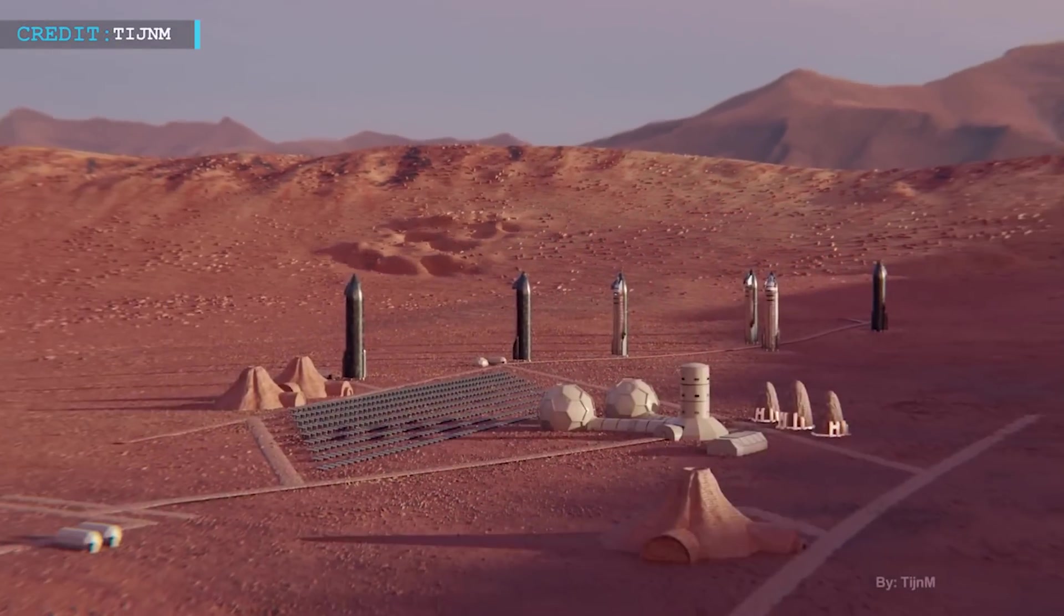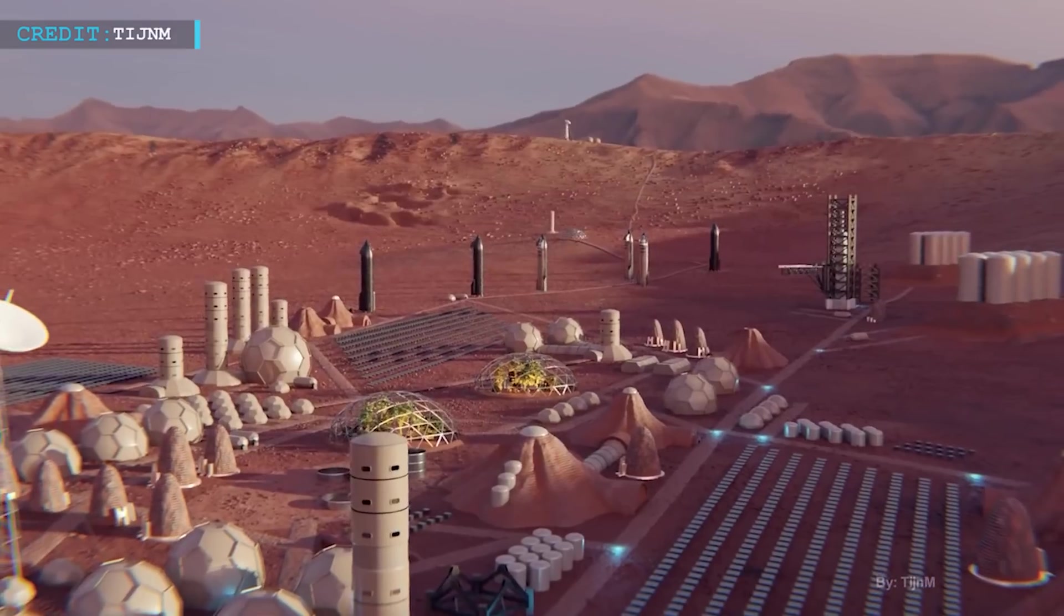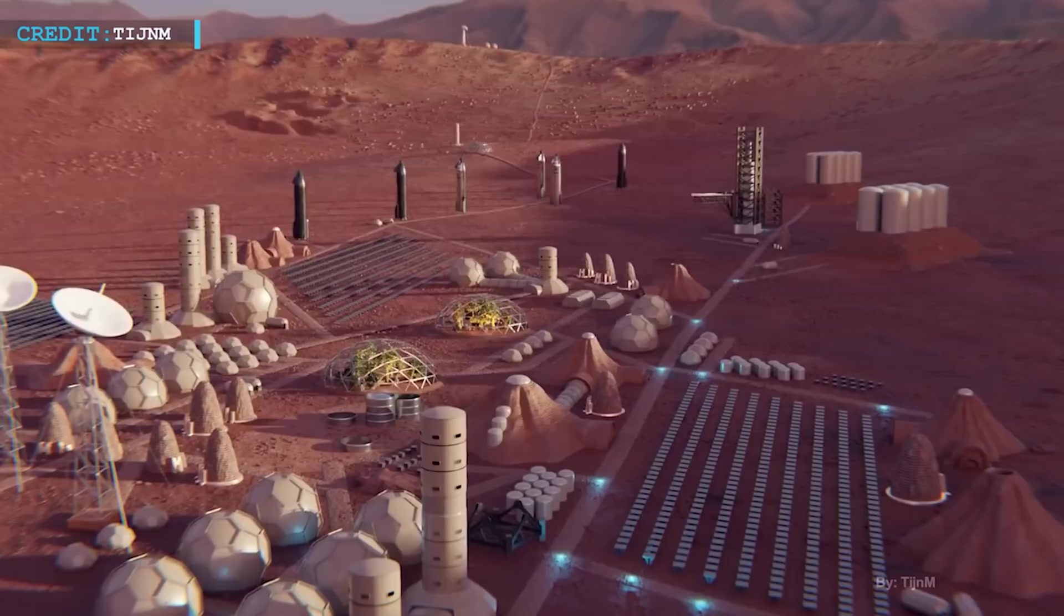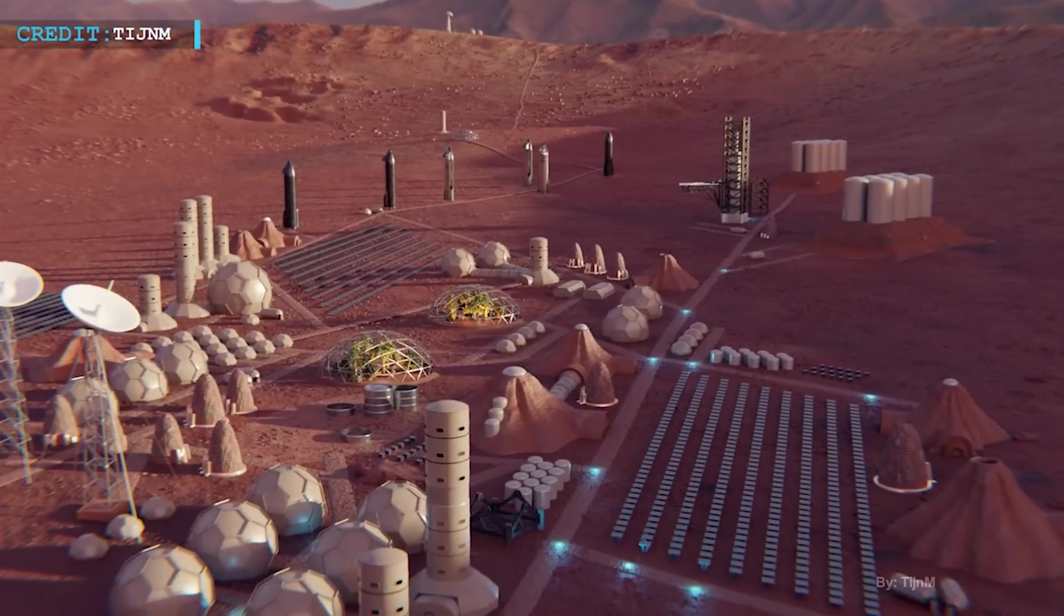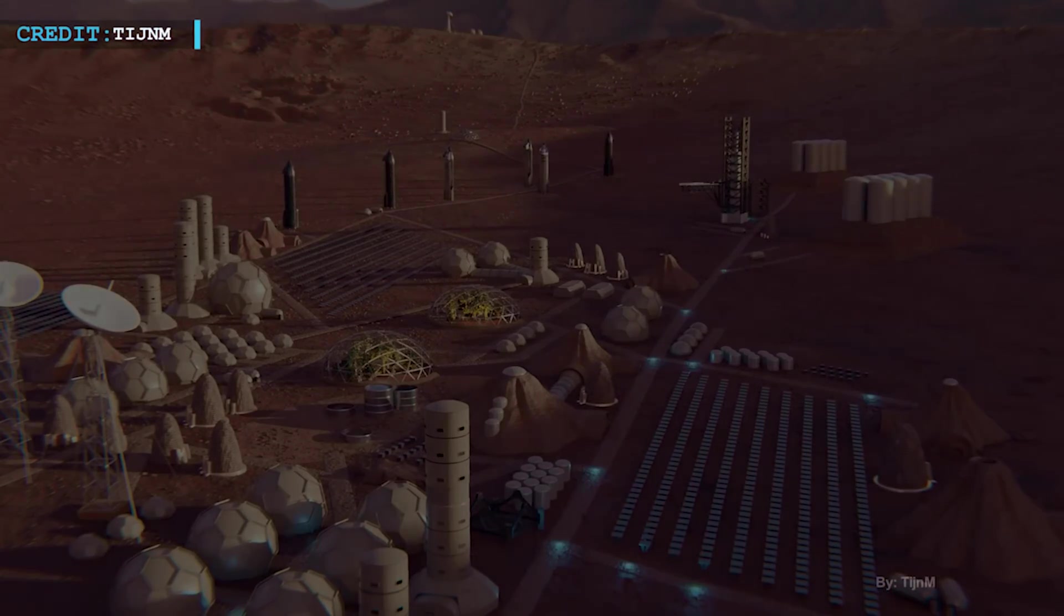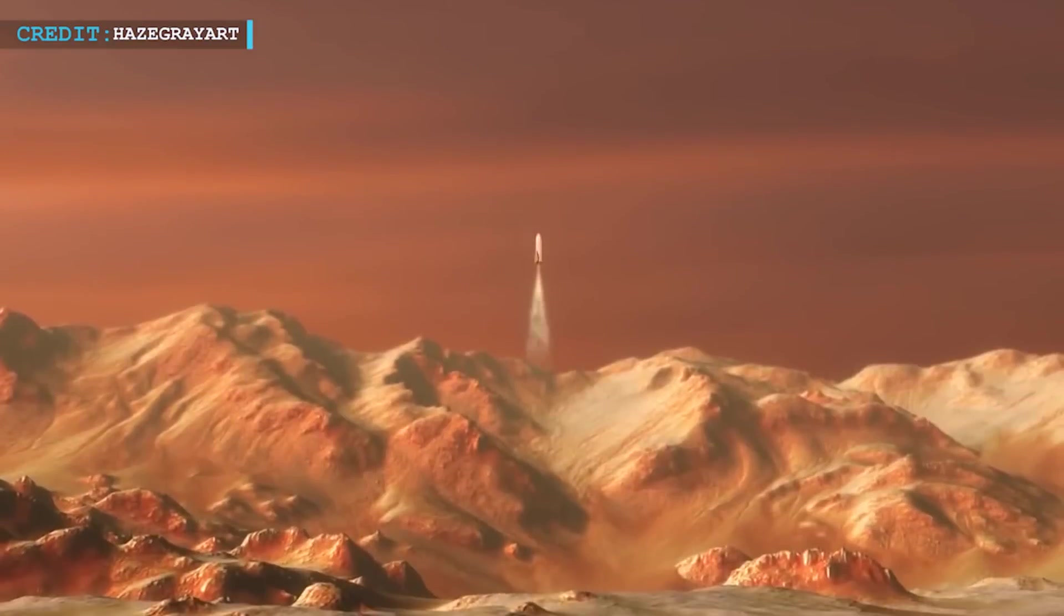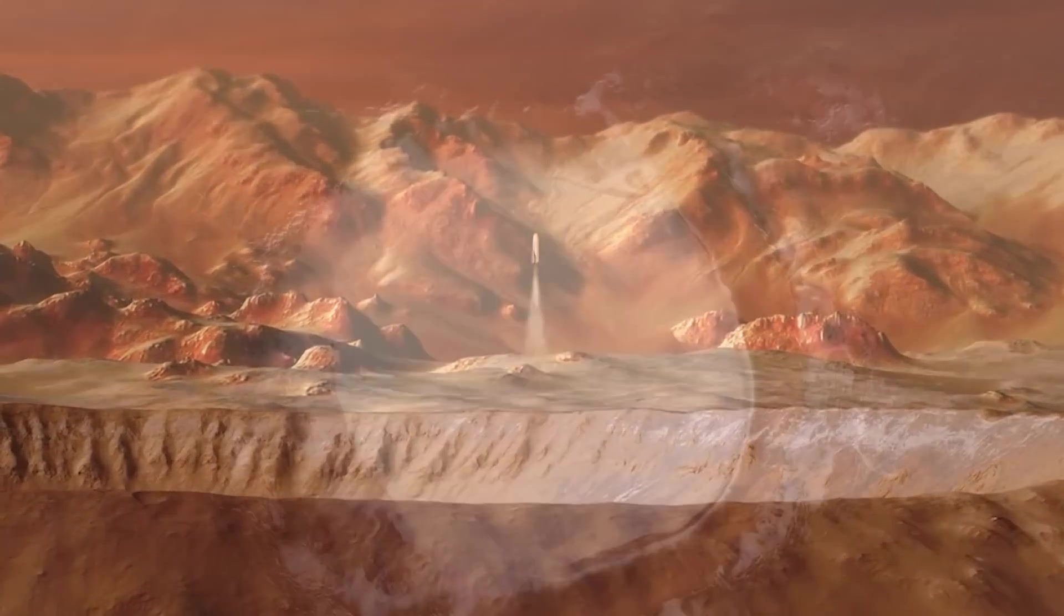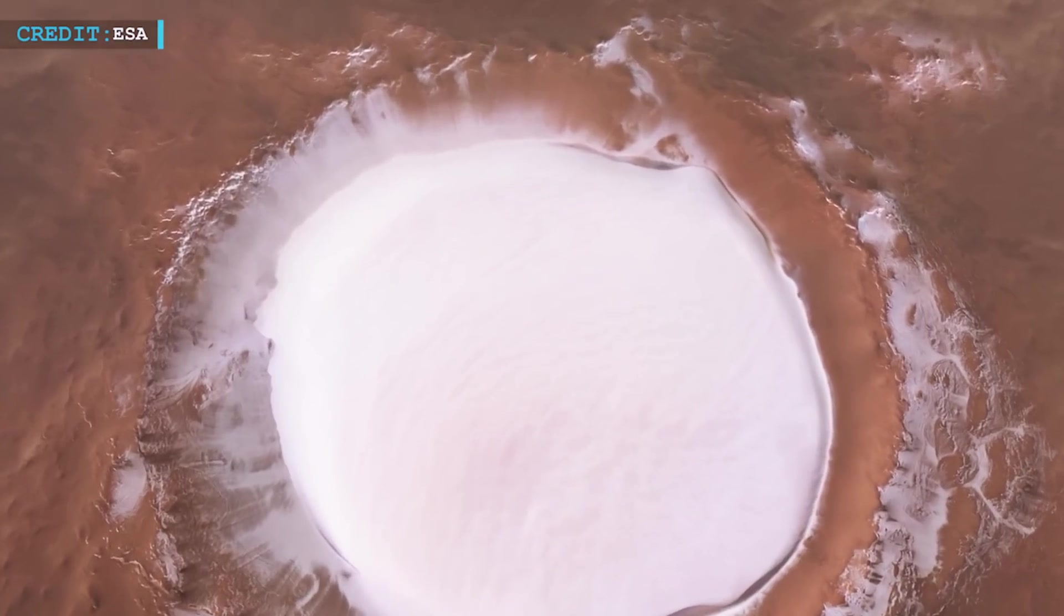These missions will play a crucial role in establishing the necessary infrastructure for human exploration. The cargo starships will transport vital supplies such as life support systems and power generators, ensuring that the first astronauts on Mars have the resources they need to set up a sustainable camp. But the cargo missions won't stop at delivering supplies, they'll also confirm the presence of natural resources on Mars.